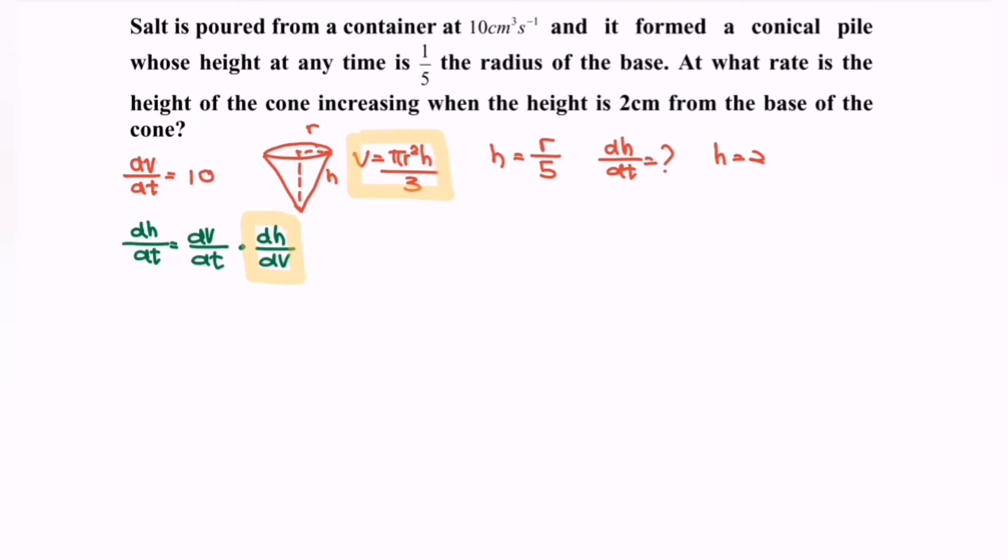So that in terms of h, meaning that we have to substitute the r. So kindly refers to the info where we have h equals to r over 5, so r is equals to 5h.